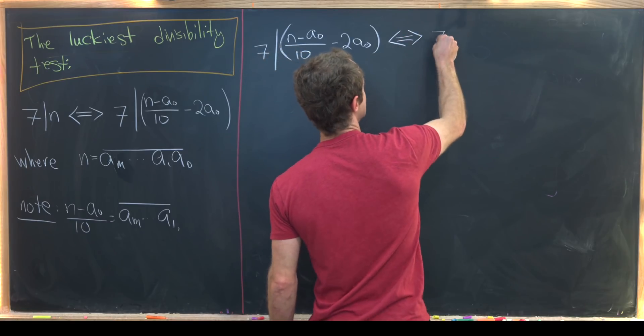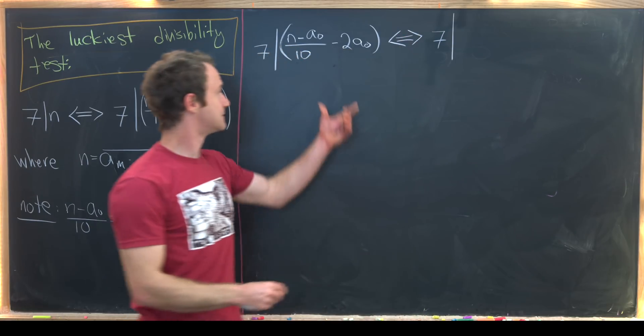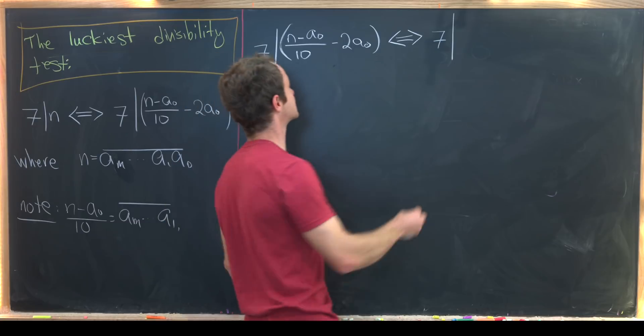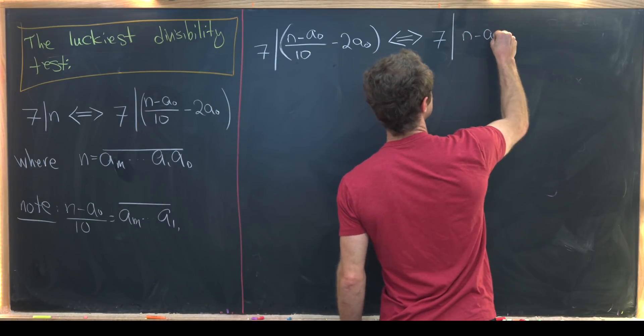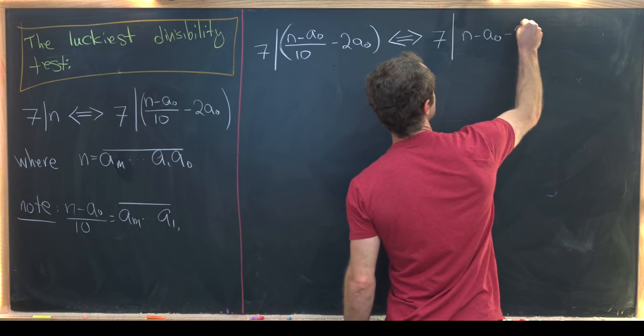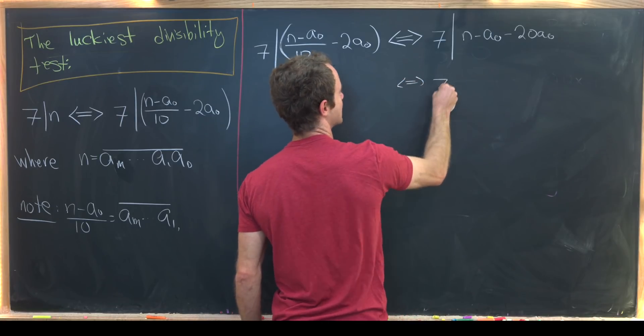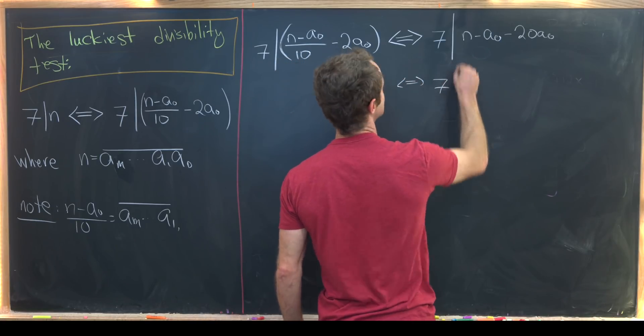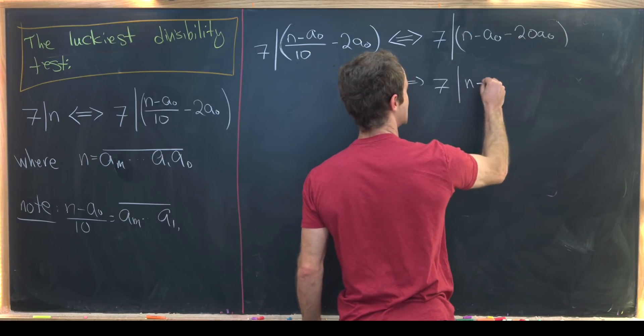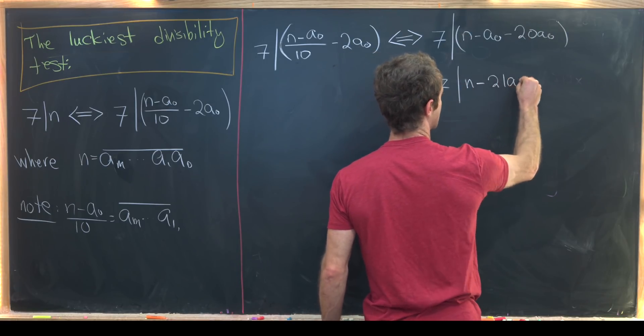This is if and only if seven divides 10 times this which is n minus a naught minus 20 a naught. But notice we can put those things together and see that that means that seven divides n minus 21 a naught.